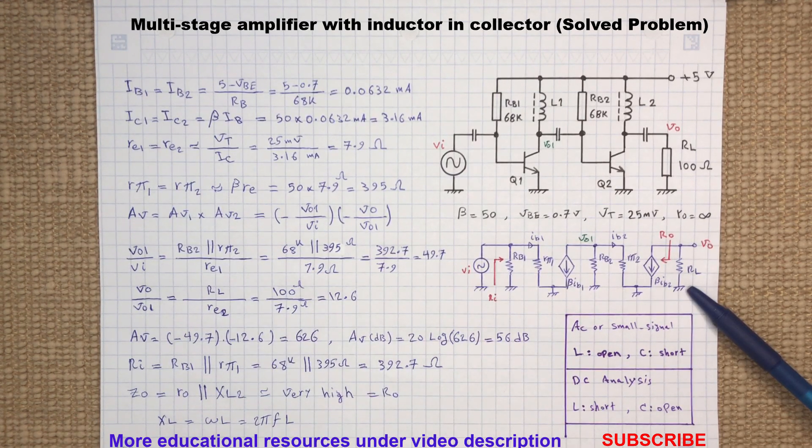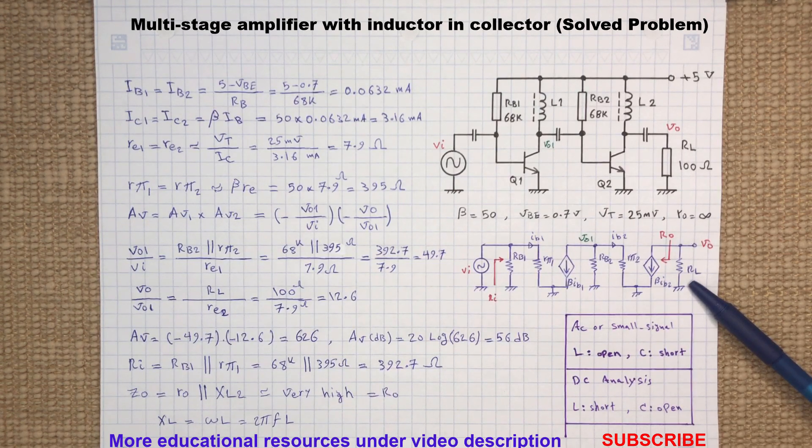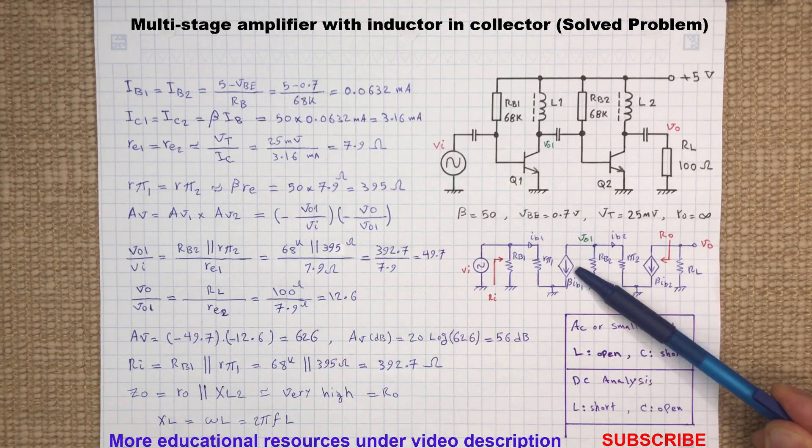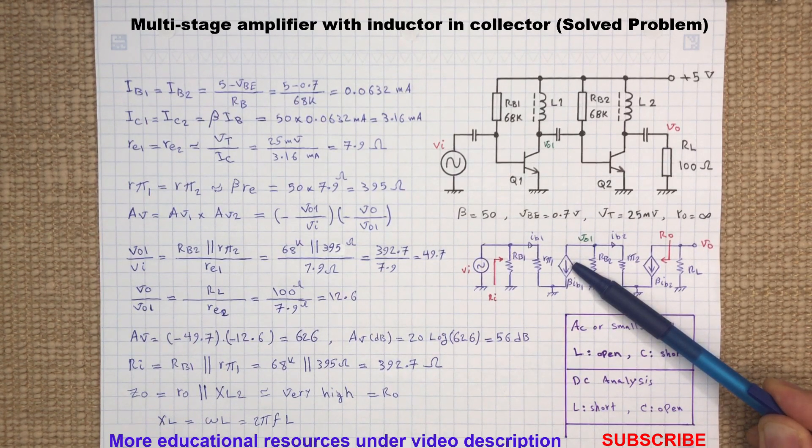Both inductors L1 and L2 are removed from the small signal model because they have a very high impedance at the desired frequency, and the transistor current gain is modeled with a dependent current source placed between collector and emitter.